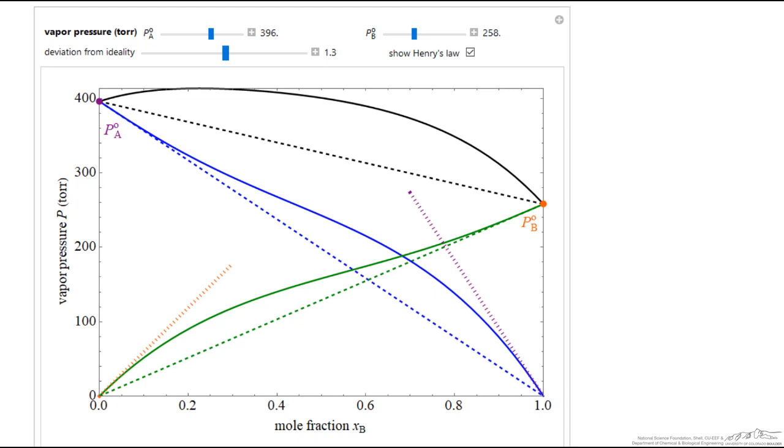At high concentrations of B, meaning low concentrations of A, this is the Henry's Law curve, and the intersection is very much off of the graph for the Henry's Law constant.